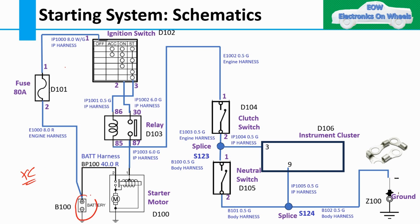I'll start with the battery. I have given B100 — what does this mean? When we are creating a particular circuit, we give the connector name or that particular device name. So for the battery terminal, I've given it B100, just for identification purposes. Now, I'm going to two harnesses: one is engine harness and the other is battery harness.